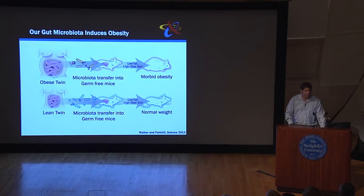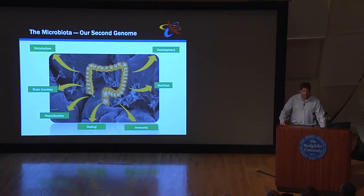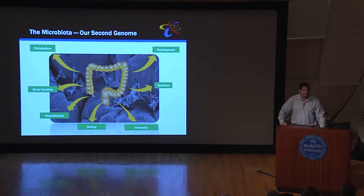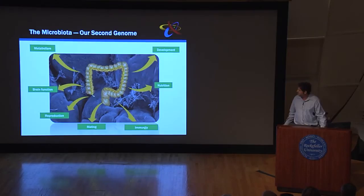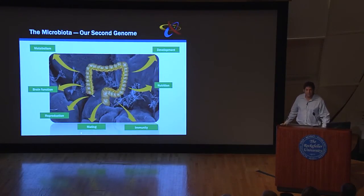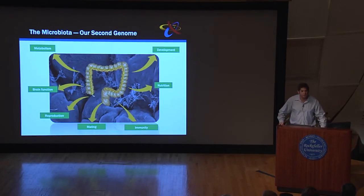These earlier observations led to a revival of the field and a lot of research, including from our group, finding that the microbiota has multiple physiological effects — some completely unexpected. These include effects on our immune system, on our nutrition, on our development, on our metabolism, on our brain function, on our reproduction, and even on our mating preferences. This last one has so far only been shown in fruit flies, but we believe it may also be true in humans.